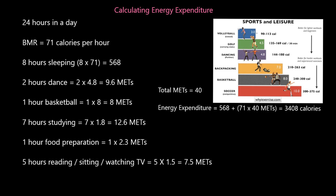So the total MET: 9.6 plus 8 plus 12.6 plus 2.3 plus 7.5 equals 40. Over the course of that 24 hours, they raise their BMR by 40 times effectively. We can now calculate their energy expenditure: 568 calories burnt whilst asleep, added to 71 calories BMR per hour multiplied by 40 MET accumulated over the day, equals 3,408 calories. This person burned 3,408 calories in this 24-hour period.